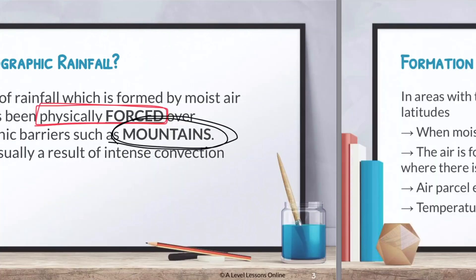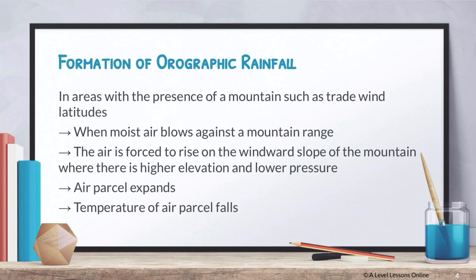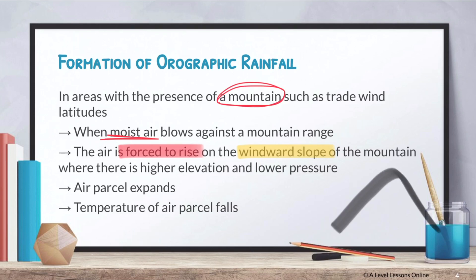Orographic rainfall does not require extreme amounts of heat to form. It can form just because a mountain is in the way and air gets forced up the slope. The presence of a mountain is what kickstarts the entire process. At trade wind latitudes, this is where the wind strikes the mountain and water vapor is being carried. When moist air blows against a mountain range, it is forced to rise on the windward side, where there is higher elevation and lower pressure.